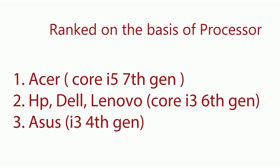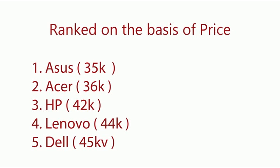On the basis of processor, here is the ranked list: Acer, having an Intel Core i5 7th gen, ranks first. HP, Dell, and Lenovo, having the same i3 6th gen processor, ranked second, and Asus, having Core i3 4th gen processor, ranked last. On the basis of price, here is the ranked list: Asus, being the cheapest among the 5, bags the first position, and Dell, being the costliest, gets the last position.